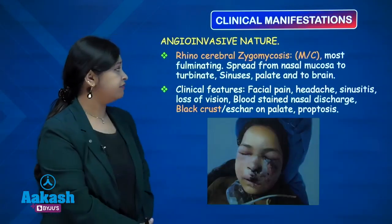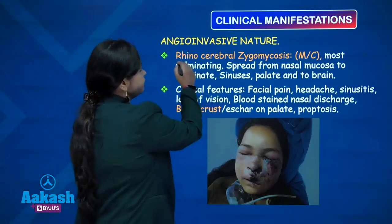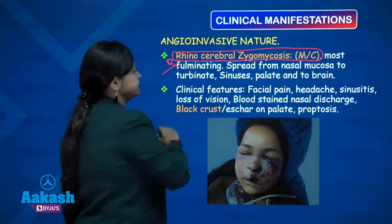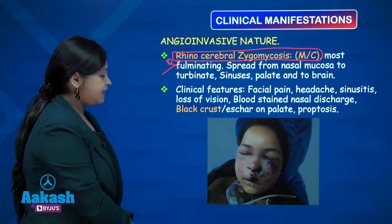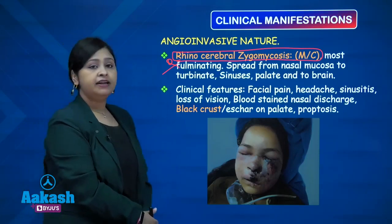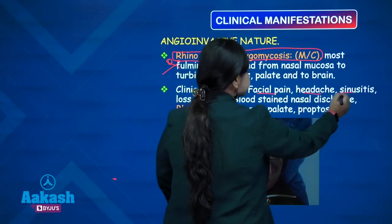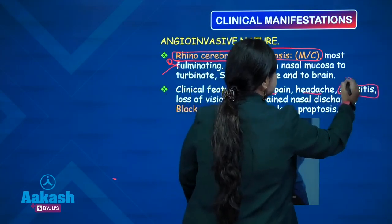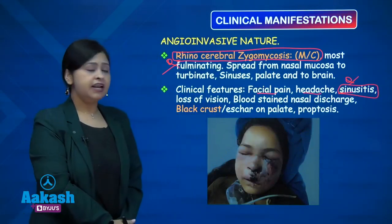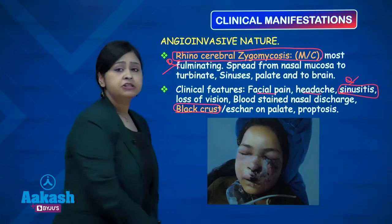Coming to clinical manifestations: rhinocerebral zygomycosis is the most common form. It is a fulminant disease with spread from the nasal mucosa to the turbinate, sinuses, palate and finally to the brain. Clinical features include facial pain, headache, sinusitis, loss of vision, blood-stained nasal discharge, black crusting or eschar on the palate, and proptosis.